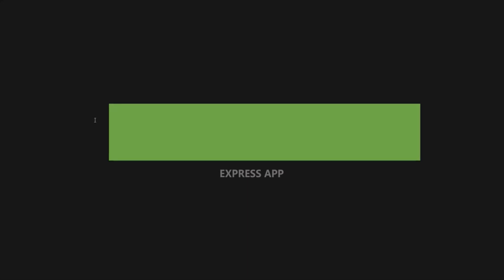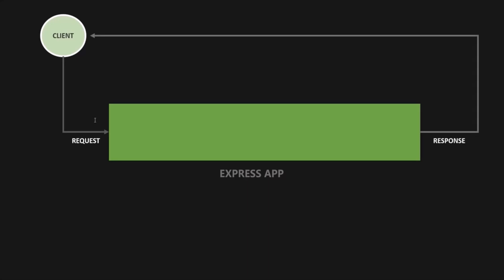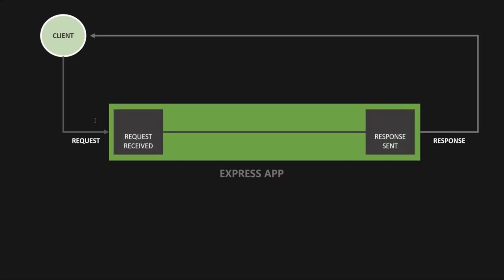Let's say here we have an Express app. When a client makes a request to this Express app, the app is going to send some response back to the client. But in between the request being received and the response being sent, there are a few things which happen. This is called the request-response cycle. Whenever the Express app receives a request from the client, it first creates the request and response object.